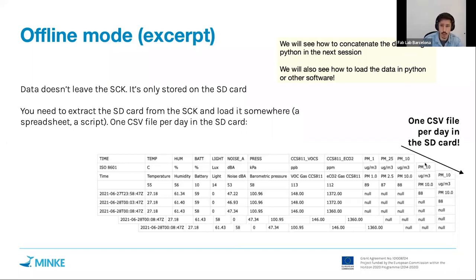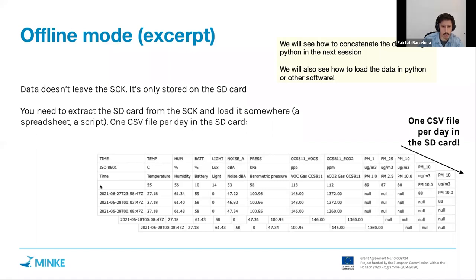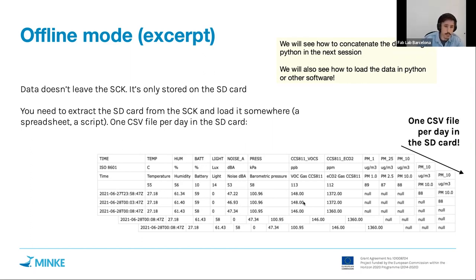The header of the CSV file has a specific structure: the first row has a short name for each channel, then the units, then a small description, and in the fourth row you have the channel IDs. If you want to upload this data to the platform, you need to keep this structure so the platform can understand which column goes where. We use the numbers in the fourth row — 55, 56, 10, etc. — to identify the channels, so it's important not to delete that row if you want to upload the data.